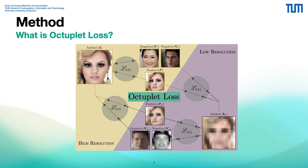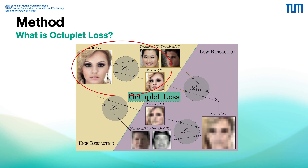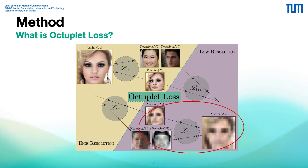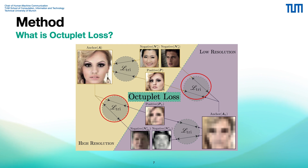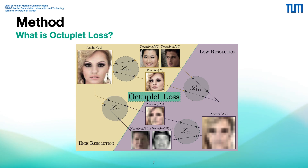Our Octoplet Loss is built as the sum of four triplet loss terms combining different image resolutions: one triplet with only high resolution images, one triplet with only low resolution images, and two triplets combining high and low resolution images. We achieve this by synthetically downsampling the whole batch, creating downsampled variants of our images and forming those four triplets.